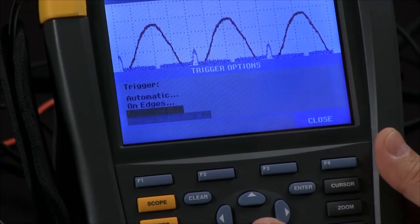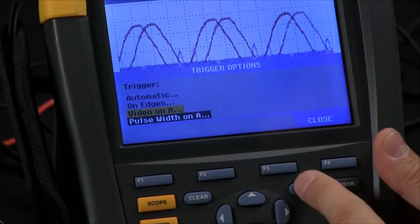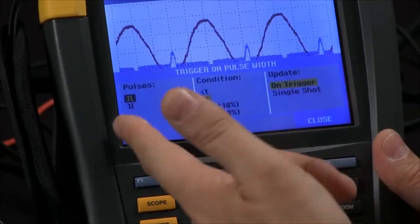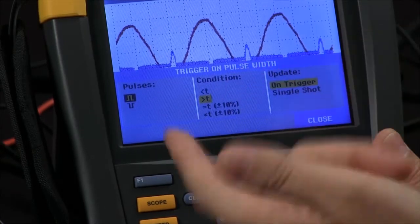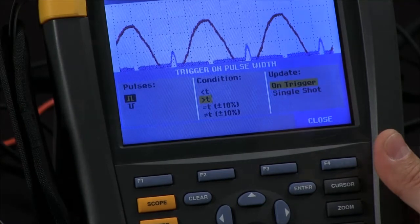We can also go back, say if you're looking at the output of a drive, and now you can trigger on a pulse. By selecting that, you can select your positive or negative pulse, the transition time, the pulse width, enabling you to get the best display on your scope meter at all times.